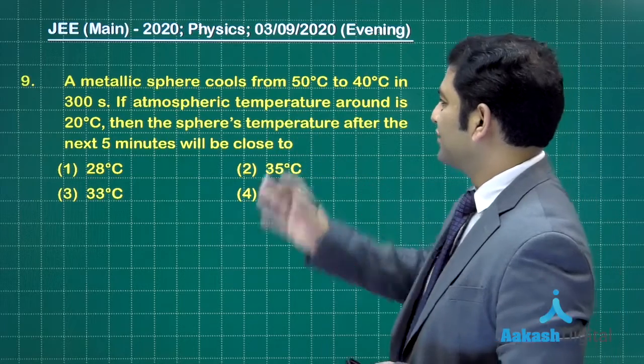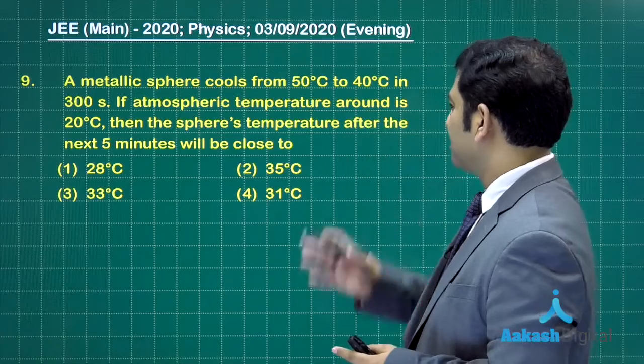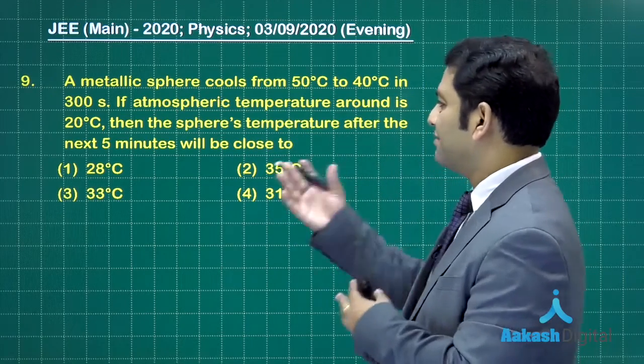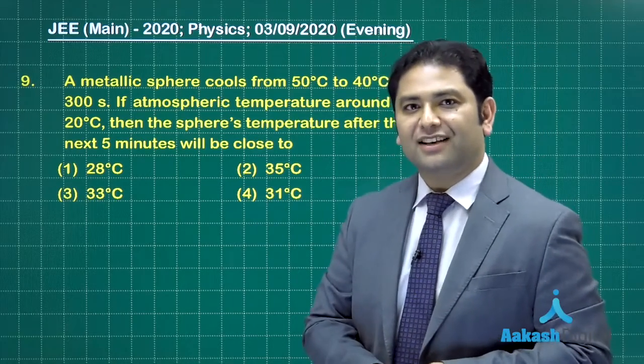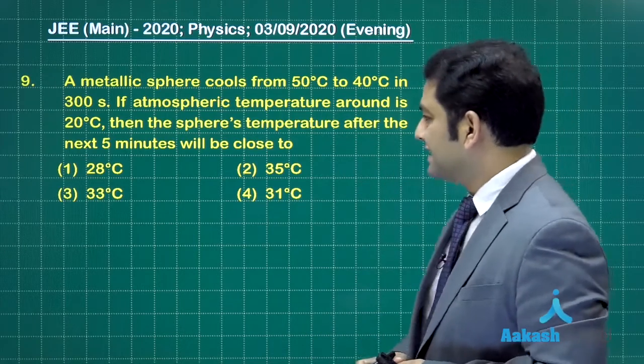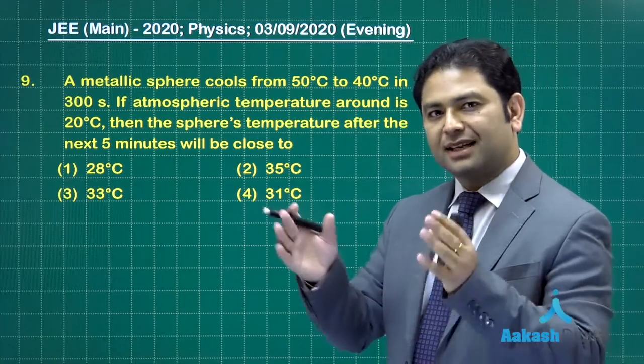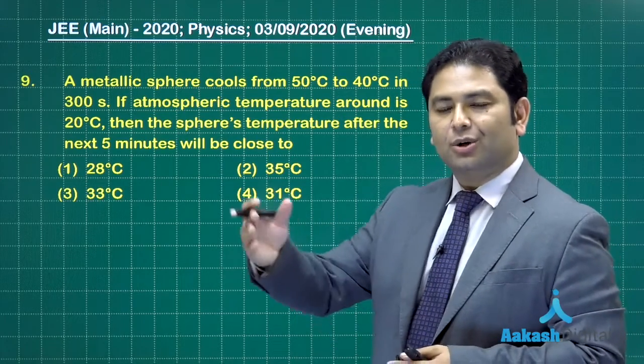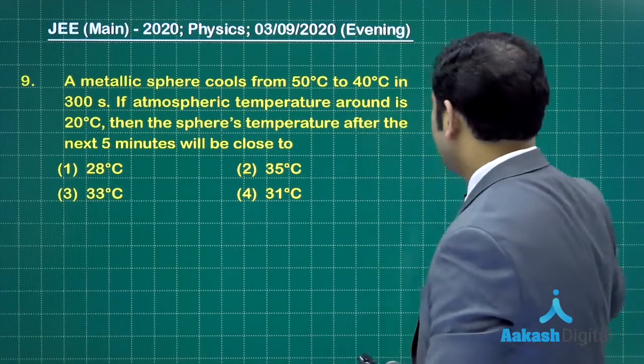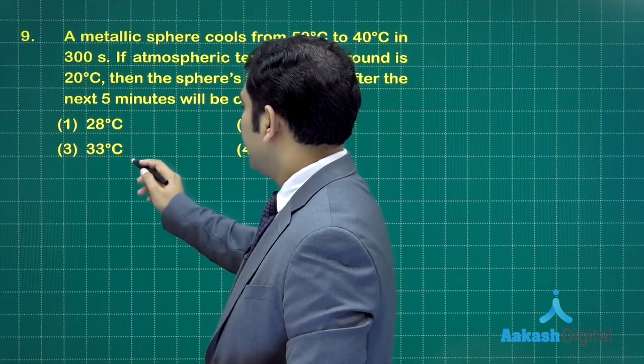Let's go to the next question, number nine. A metallic sphere cools from 50 degrees to 40 degrees in 300 seconds. If atmospheric temperature around is 20, the sphere's temperature after next five minutes - that means after next 300 seconds again - in the first 300 seconds there is a drop of 10 degrees, and in the next we need to calculate the drop. That drop would be of course less than 10 degrees because with increasing time the rate of cooling decreases. I'm talking about Newton's law of cooling.